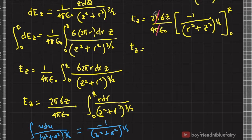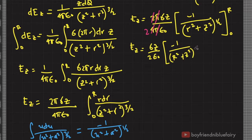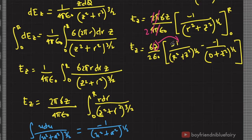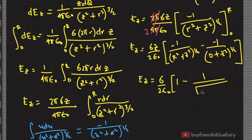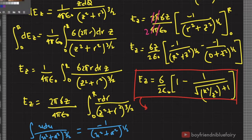Evaluating the expression, pi cancels and 2/4 becomes 1/2, giving sigma z over 2ε₀ times [−1/(R² + z²)^(1/2) − (−1/z)]. Multiplying through by z, the final expression is: E_z = σ/(2ε₀) · [1 − 1/√(R²/z² + 1)]. This is our expression for the electric field due to a uniformly charged disk.